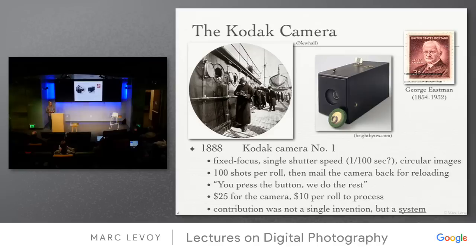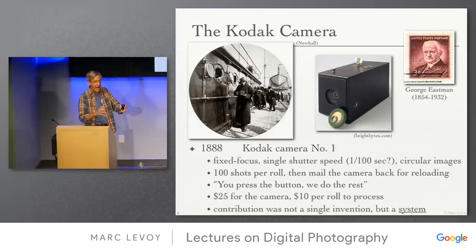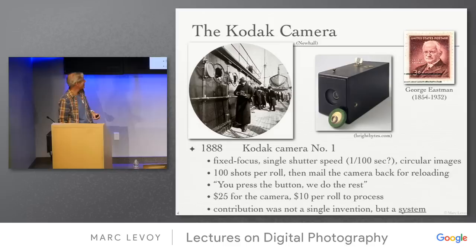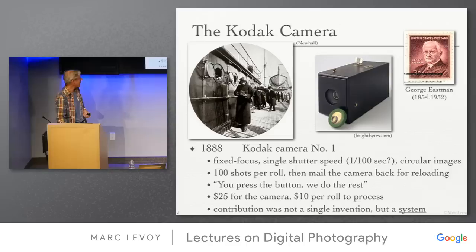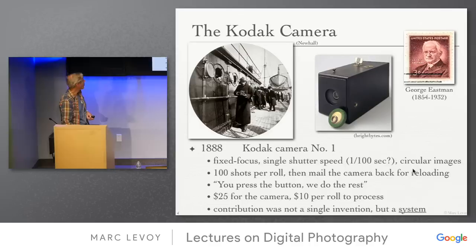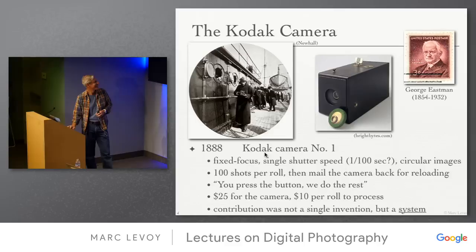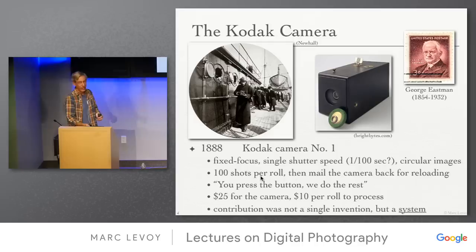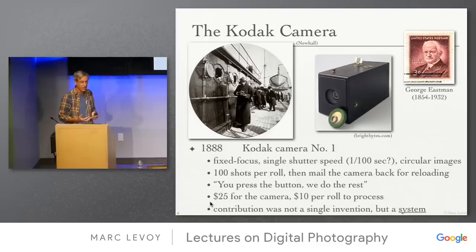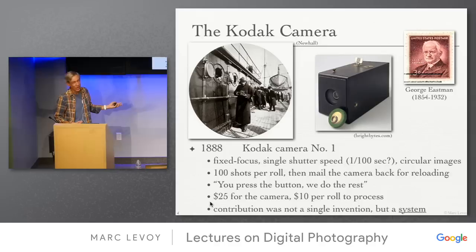These developments all led to the breakthrough moment: the invention of the Kodak camera by George Eastman. It's a fixed focus, single shutter speed — hundredth of a second — that produced circular images when it first came out. The word Kodak was Eastman's own invention, sort of like the clicking sound of a camera. You got a hundred shots per roll, then mailed the entire camera back; they processed it and sent it back with new film. The key here is not a single invention but a system — what we'd now call an ecosystem — and that was really the breakthrough.